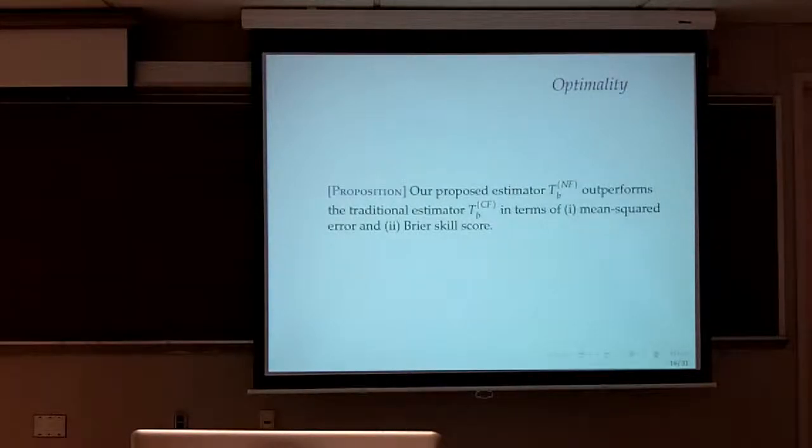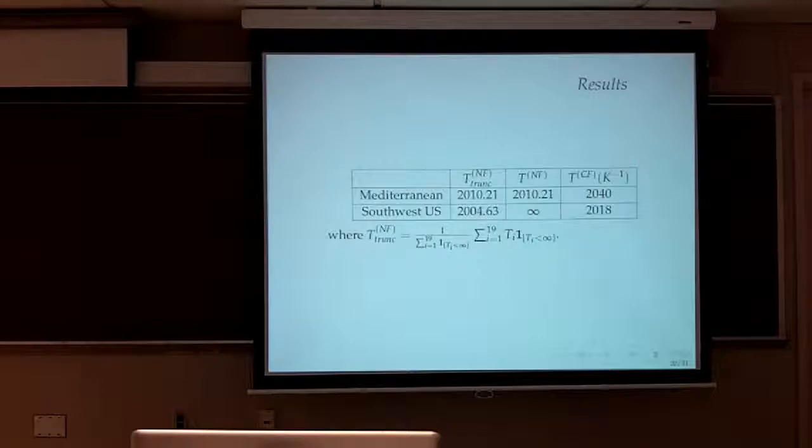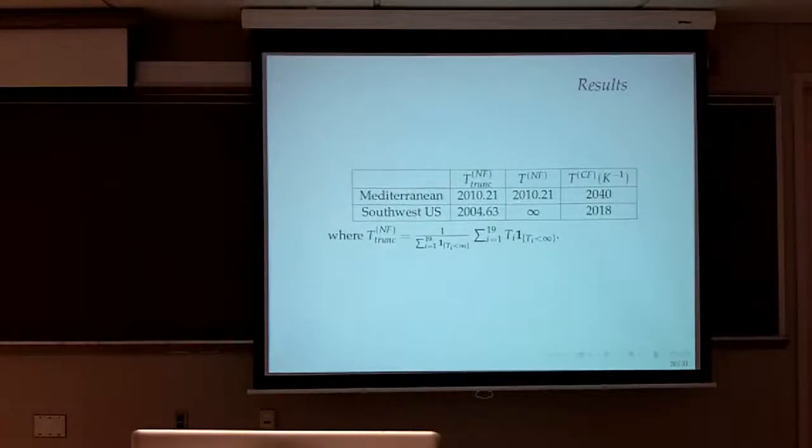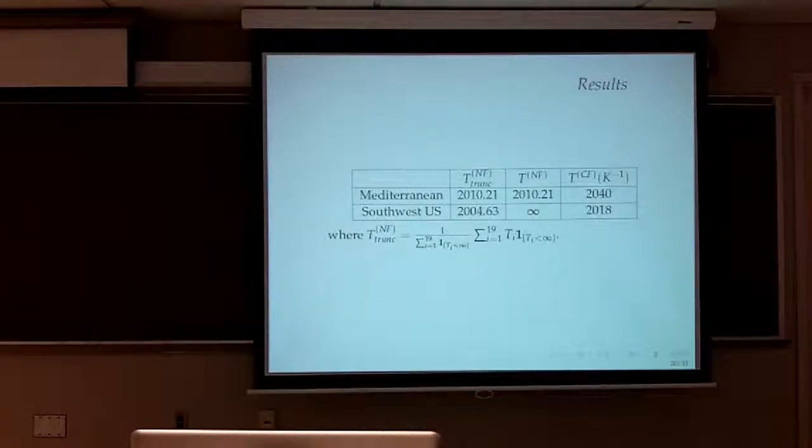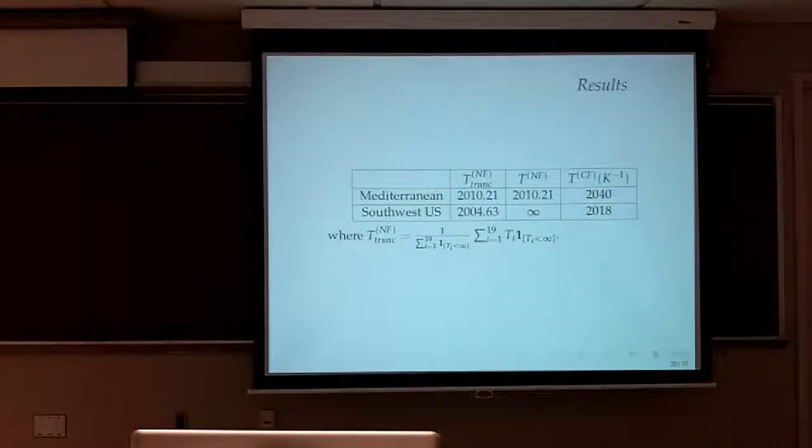And the estimator, the new forecast, using the average times, the average of the times, as opposed to the time of the average crossing the boundary, outperforms the traditional estimator in terms of mean square error and prior score. So under the conditions that I stated, this can be proved. And I can show it to you later on. I can prove this to you. Now, let's look at the results. I had to truncate the three outliers, right? So this is the new forecast truncated. In the Southwest, the new forecast truncated gives me the date of 2004 for the drought.